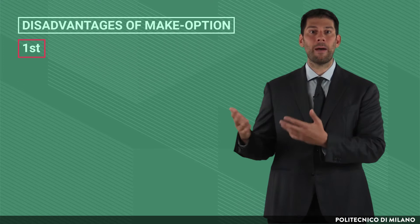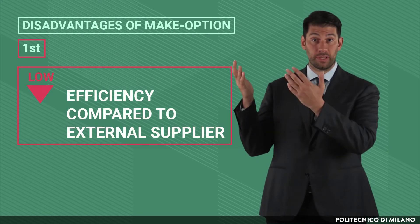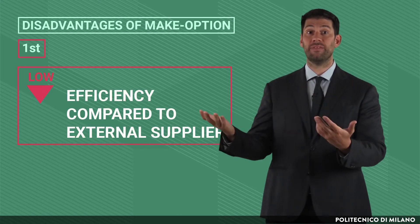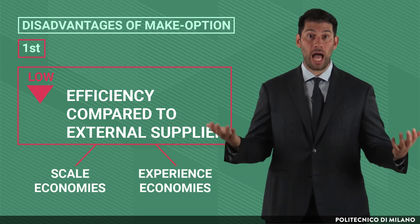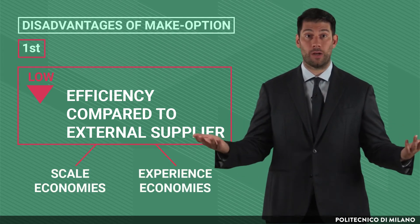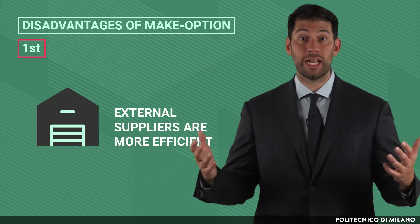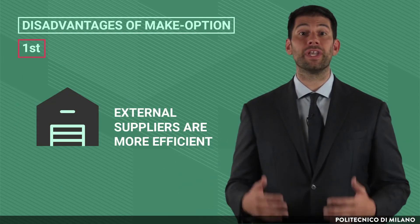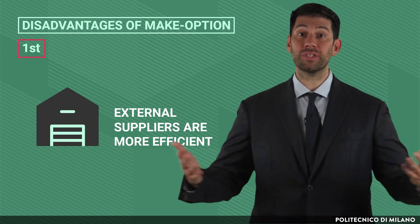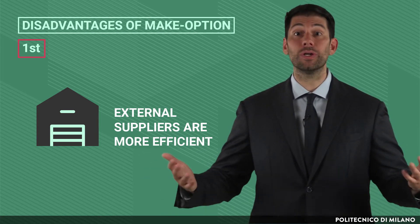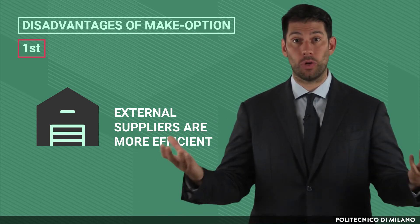First of all, our company could be less efficient than a given external supplier in carrying out the activity, due to the effect of scale economies and experience economies. Suppliers are likely to carry out the same activity for a number of customers, and will therefore have a higher scale and learning speed than the single company can achieve alone.